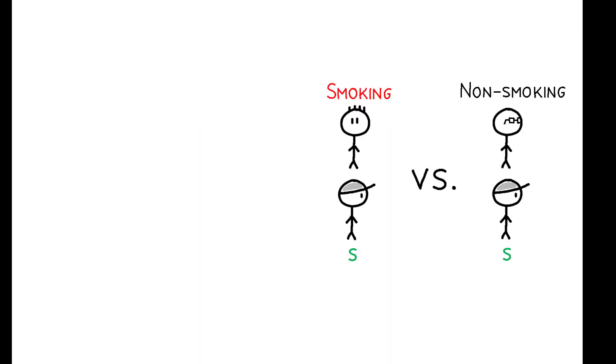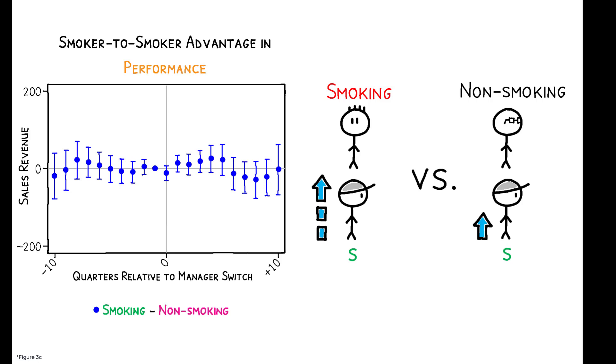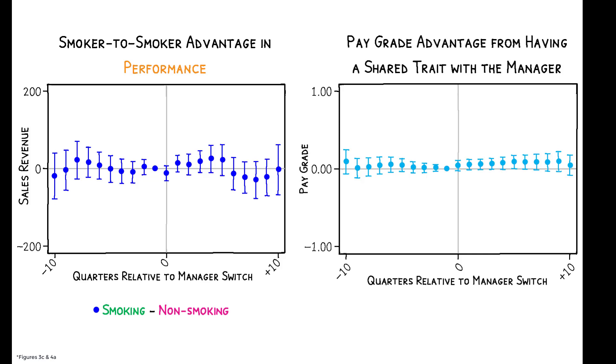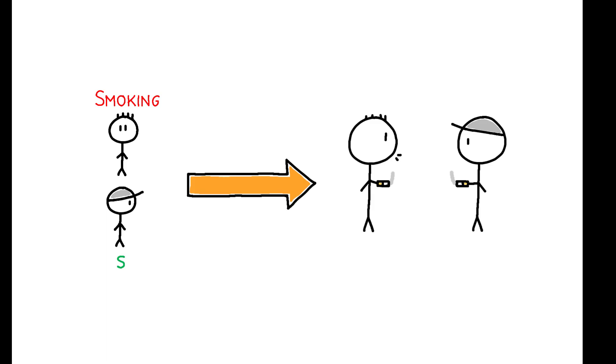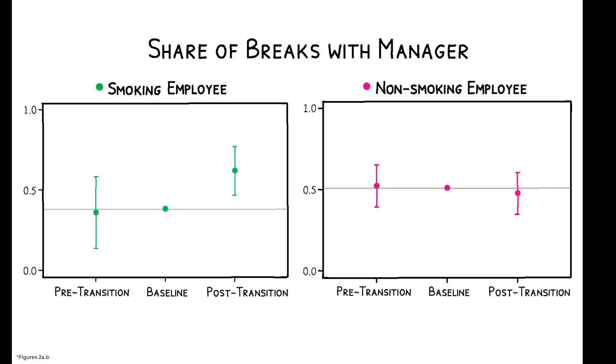So why are smoking employees promoted more quickly under a smoking manager? There is no evidence that they become any more productive, nor is it the case that managers favor employees who are more similar to them. There is no boost in promotions for employees who are born in the same province, went to the same college, or who are close in age to their manager. But the evidence does suggest that employees and managers who smoke socialize more, primarily through shared smoking breaks.